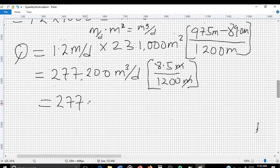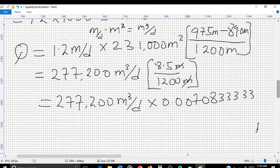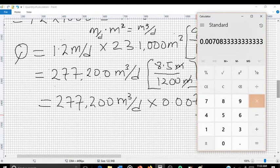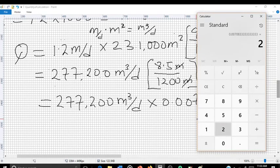We have 277,200 meter cube per day multiplied by 0.00708333. Let's multiply 277,200 meter cube per day by this value.